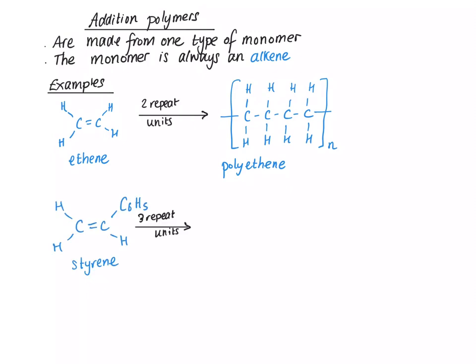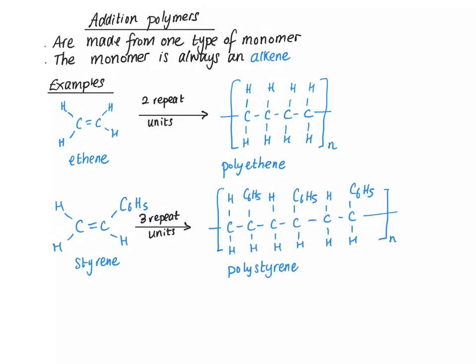This molecule is called styrene, also called phenylethene, and it's an alkene. We're asked to show three repeat units, so we're going to have one molecule of phenylethene here, another molecule here, and another molecule here. If we draw polystyrene showing three repeat units, we have one repeat unit, a second repeat unit, and a third repeat unit. This goes on for hundreds of thousands or perhaps millions of carbon atoms, but because the question says show three repeat units, we only show what we see when we zoom in and look at three separate monomers stuck together.